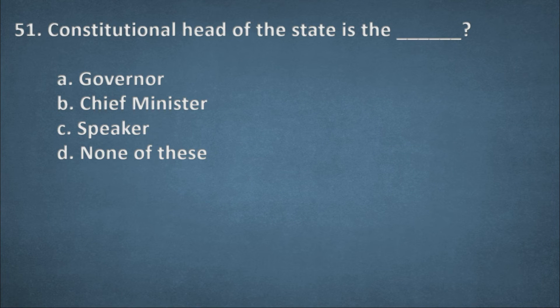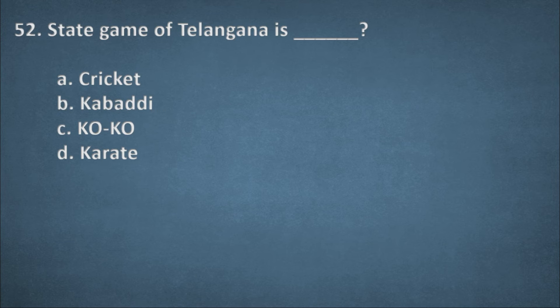Next one. Constitutional head of the state is. Options: Governor, Chief Minister, Speaker, None of this. Right option, A, Governor. Next one. State game of Telangana is. Options: Cricket, Kabaddi, Koko, Karate. The right option, B, Kabaddi.